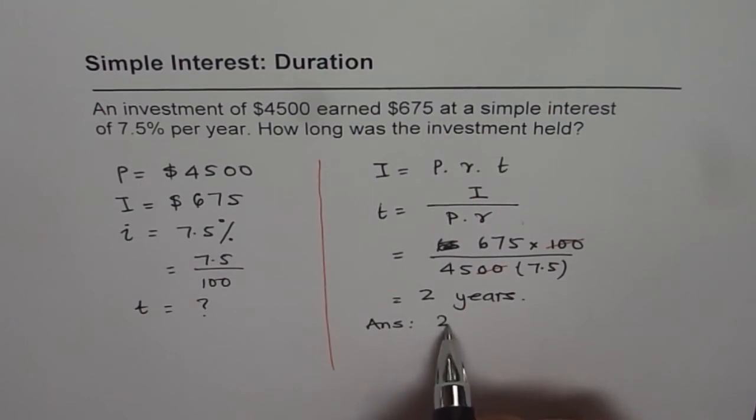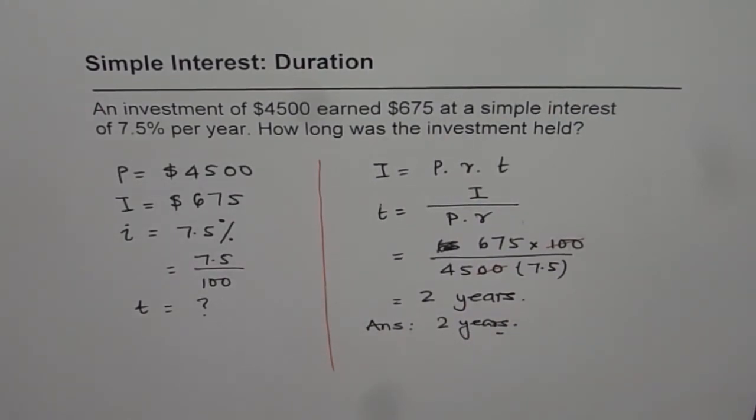The answer is 2 years. At times we may have to rearrange the formula to get the other values. That's the whole idea. Thank you and all the best.